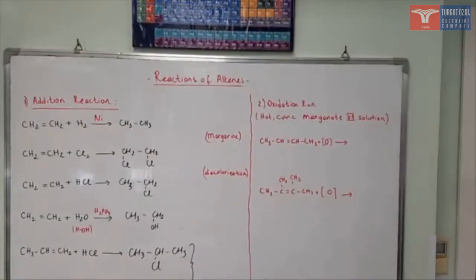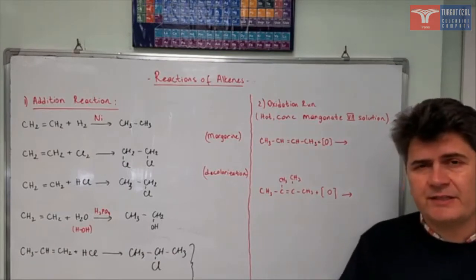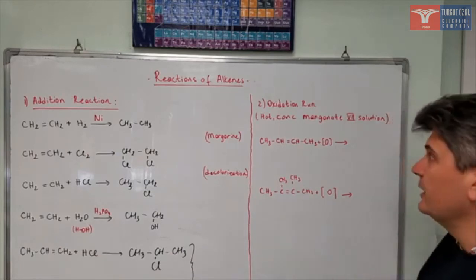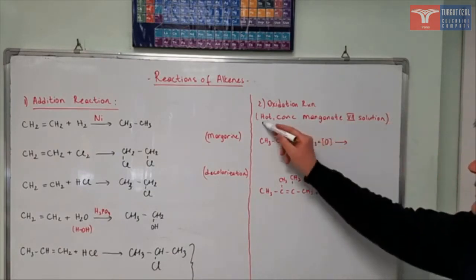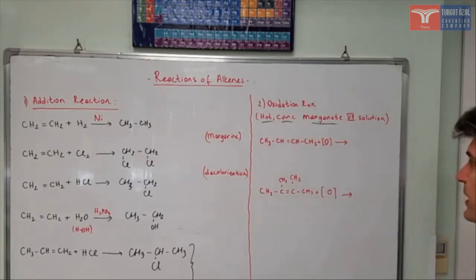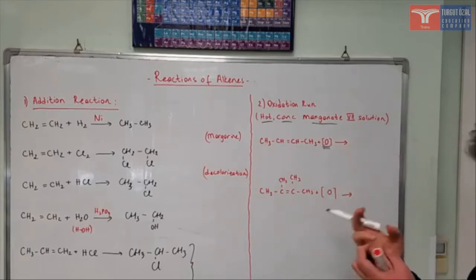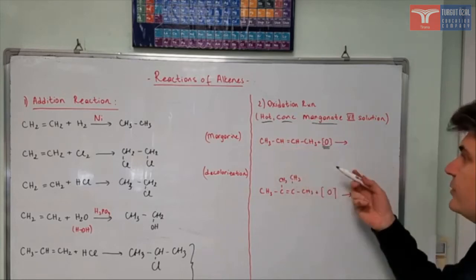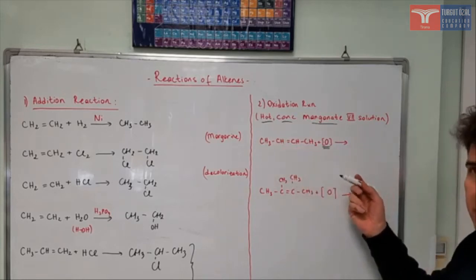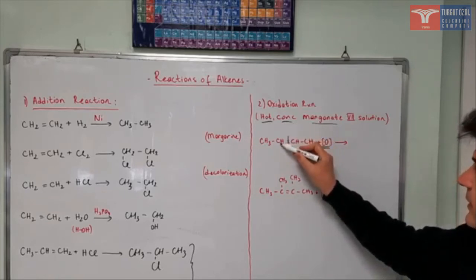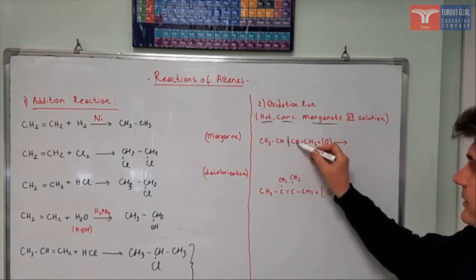The second reaction I'm going to show you is the oxidation reaction. Oxidation of alkenes is a little bit complicated, so I'll give you only one case. The case with hot concentrated permanganate (MnO₄⁻) solution — if you have such an oxidizing agent in the medium with a compound, you'll get two products by the breakage of the double bond. Both carbon atoms will be oxidized.